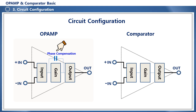The op-amp circuit operates in a negative feedback configuration. In the high frequency band, if the output is inverted by 180 degrees, it becomes positive feedback and oscillates. Therefore, a phase compensation capacitor is added to the gain stage inside the op-amp to prevent oscillation. Positive feedback is a structure that continuously adds the output to the input and amplifies it, which causes oscillation.